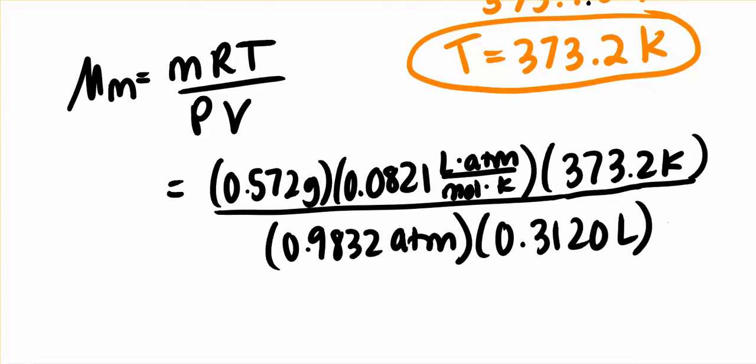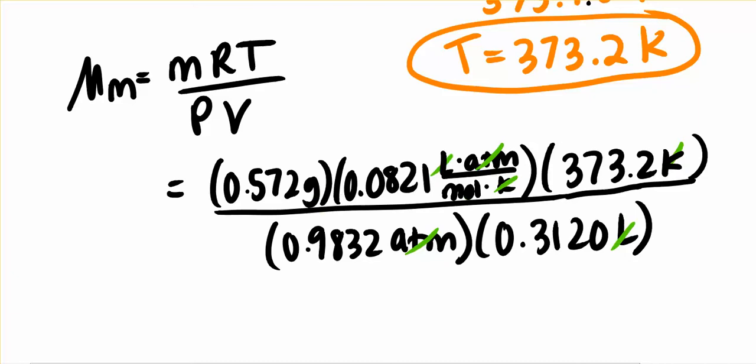We've plugged in all of our numbers, and if you want to, you can look and see that all the units are canceling. See what I'm talking about? This K cancels with this one under there. That atmosphere cancels with this one here. This liter cancels with this one down here. And then we're left with two units, grams over moles, which is what we would expect.